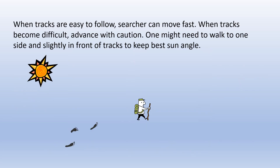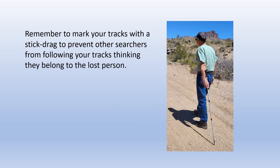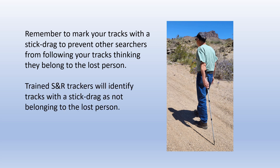When tracks are easy to follow, searches can move fast. When tracks become difficult, advance with caution — one might need to walk to one side and slightly in front of tracks to keep the best sun angle. Remember to mark your own tracks with a stick drag to prevent other searchers from following your tracks thinking they belong to the lost person. Trained search and rescue trackers will identify a stick drag as not belonging to the lost person.